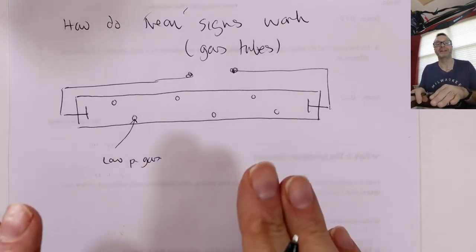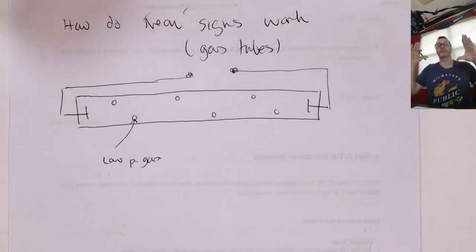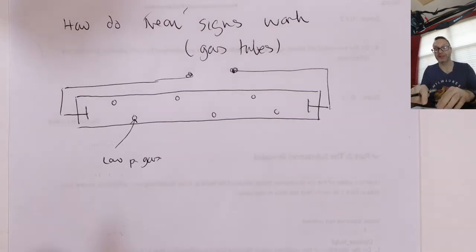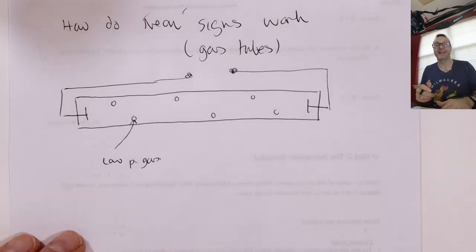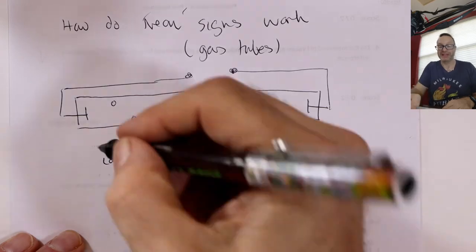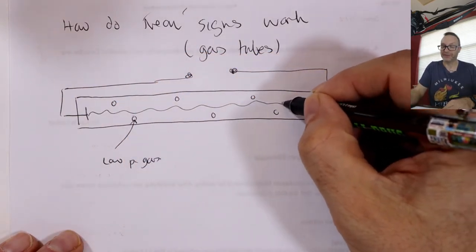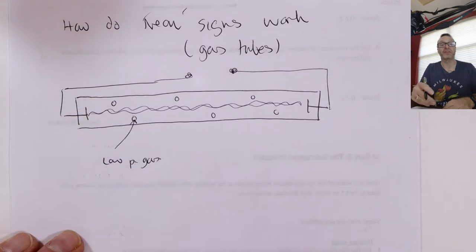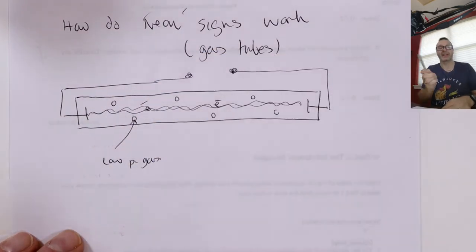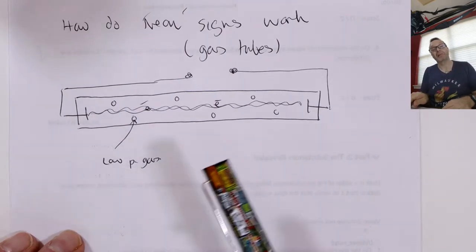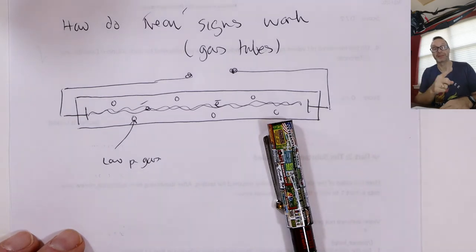It's low-pressure inside — if you break one of these things they implode, they don't explode. It's low-pressure so they fall in on themselves. When you turn on the light you basically fire electrons across it like little lightning bolts. The frequency of electricity is 50 hertz, meaning 50 little lightning bolts per second — electrons flying across really fast. Because it's low-pressure, most of the time they miss the gas atoms, but occasionally they hit.